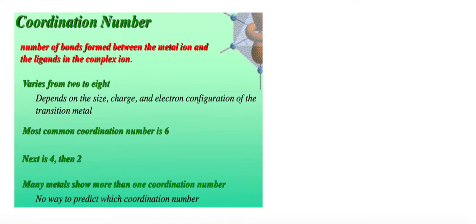Alright, coordination number. There's not much we will do with coordination number except for naming it. Coordination number could vary. It is the number of bonds that is normally formed between the metal ion and the ligands in the complex ion. Once they form the bond we refer to them as complex ion.